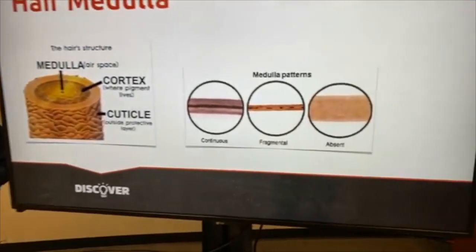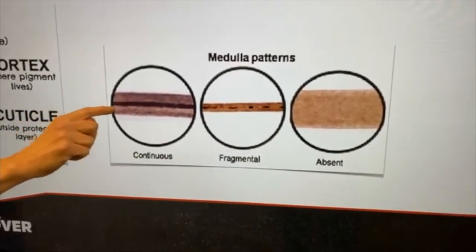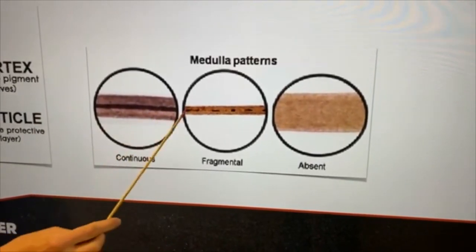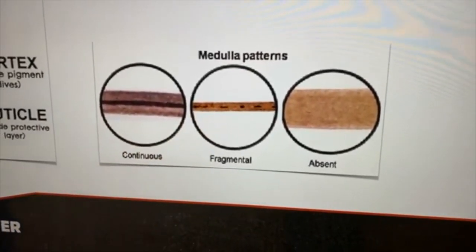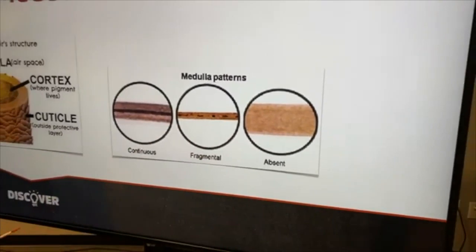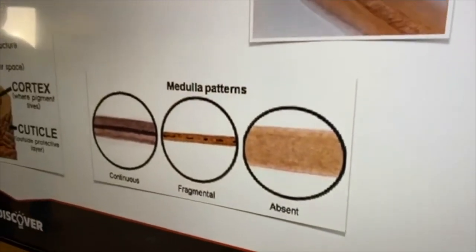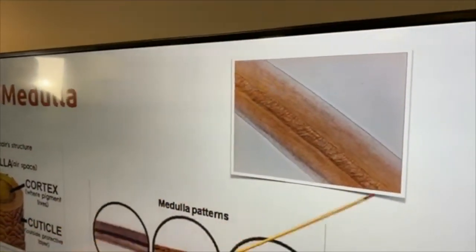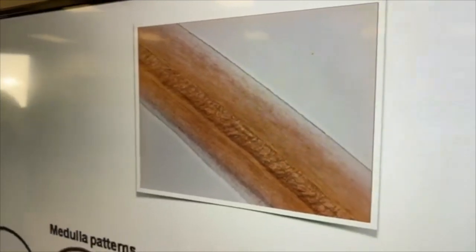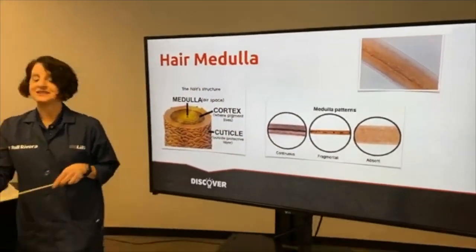There are three basic medulla patterns: continuous, fragmented, and absent. In a continuous pattern, we see this solid black line running up through the center right here. In a fragmented medulla pattern, we can see where it's actually broken. It's almost like Morse code. It actually looks like dots and dashes running up the center of the hair shaft. And then some people have what we call absent, where you literally just don't see a pattern in the medulla at all. Sometimes you'll see a hair sample that looks like this, where the medulla is a little more present, but you still don't see a distinct continuous or fragmented pattern running up the center of the hair shaft. These are all human hairs that you see here. What we're going to find, though, when we go look at animals, it is distinctly different.